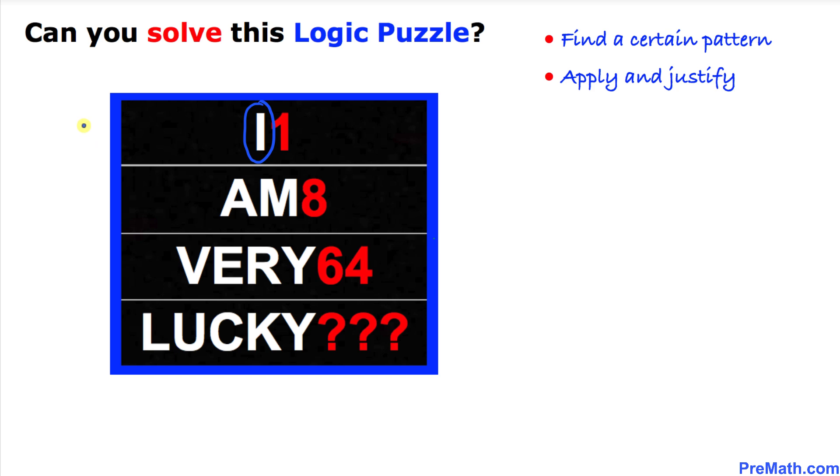I has just one letter. I'm going to write down one. M in the next row has two letters, I'm going to write down two. For the third row we got very, which has four letters. I'm going to write down four.